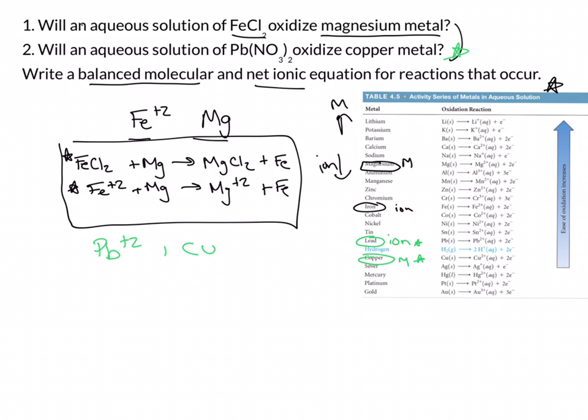So in this context, the lead plus two ion is not going to oxidize the copper. So in this context, what we would indicate is that no reaction will occur or NR. And since there's no reaction, we're not going to have a balanced molecular equation or net ionic equation.